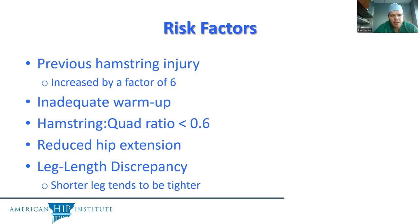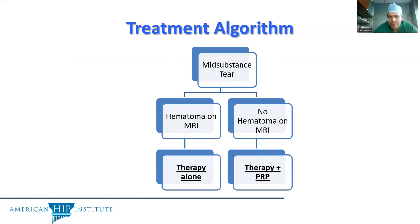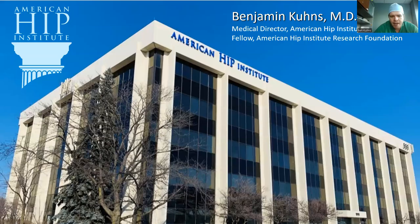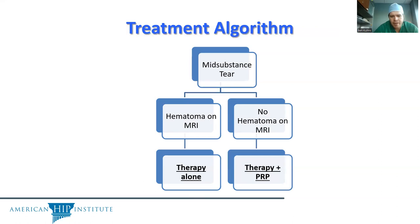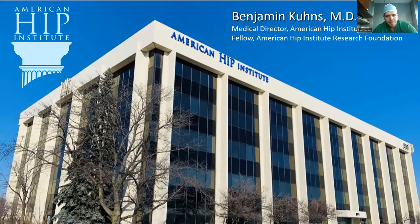Looking at mid-substance hamstring strains, these are treated non-operatively. This is an injury going down the hamstring muscle belly away from the hip — a very common injury in adults, think weekend warrior type. Risk factors include a previous hamstring injury, a deficient hamstring-to-quad ratio, reduced hip extension, or a subtle leg length discrepancy. The treatment for mid-substance tearing is non-operative. If there's a hematoma, it can be treated with therapy or PRP; if there is no hematoma, therapy alone is appropriate. Thank you so much for your time.